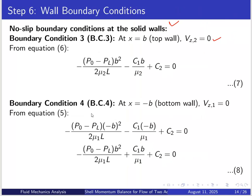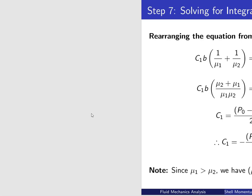At x equals minus B (bottom wall), Vz1 equals 0, which gives another equation. We now have two equations and two unknowns, C1 and C2. Solving these simultaneously will give us C1 and C2.